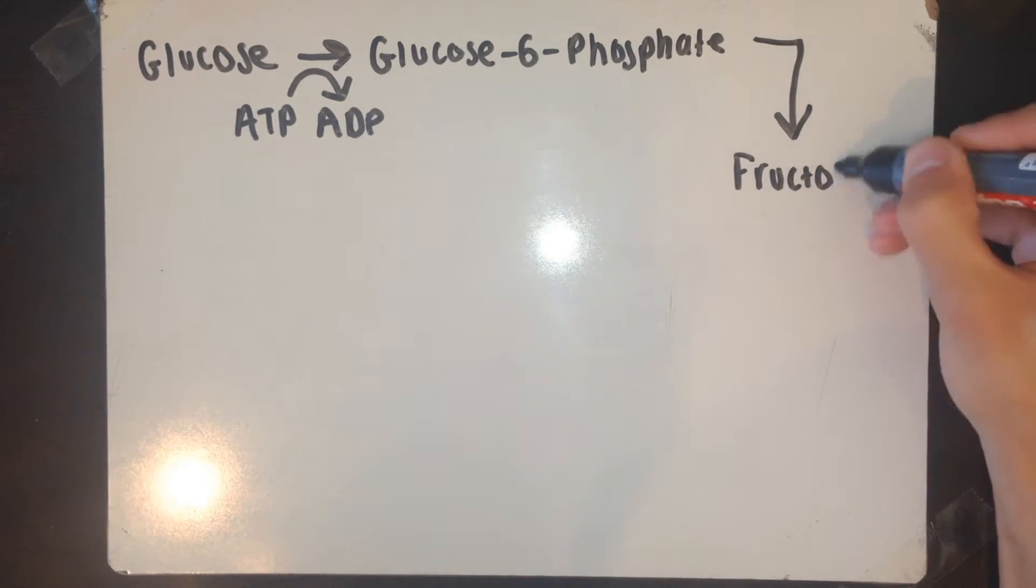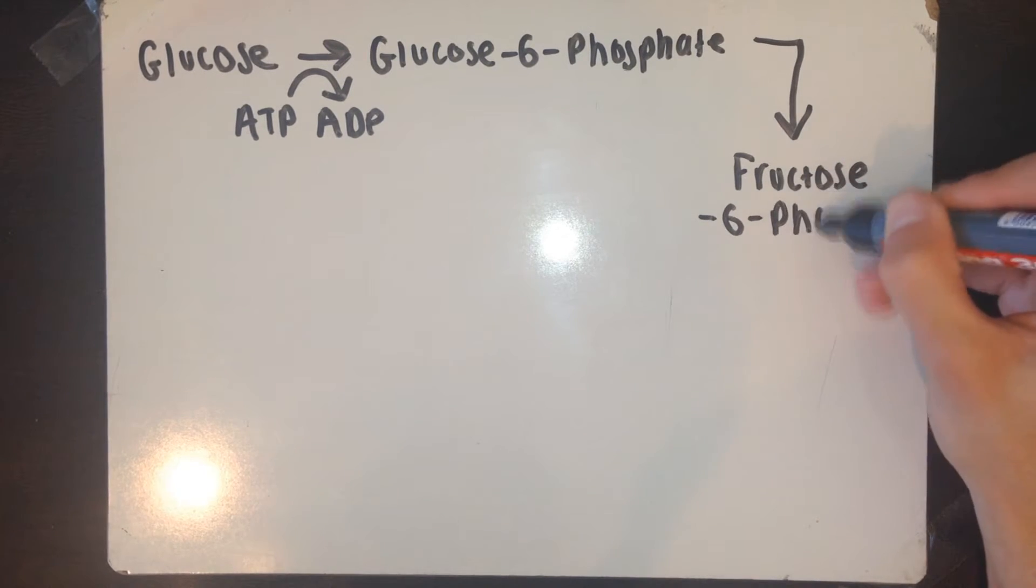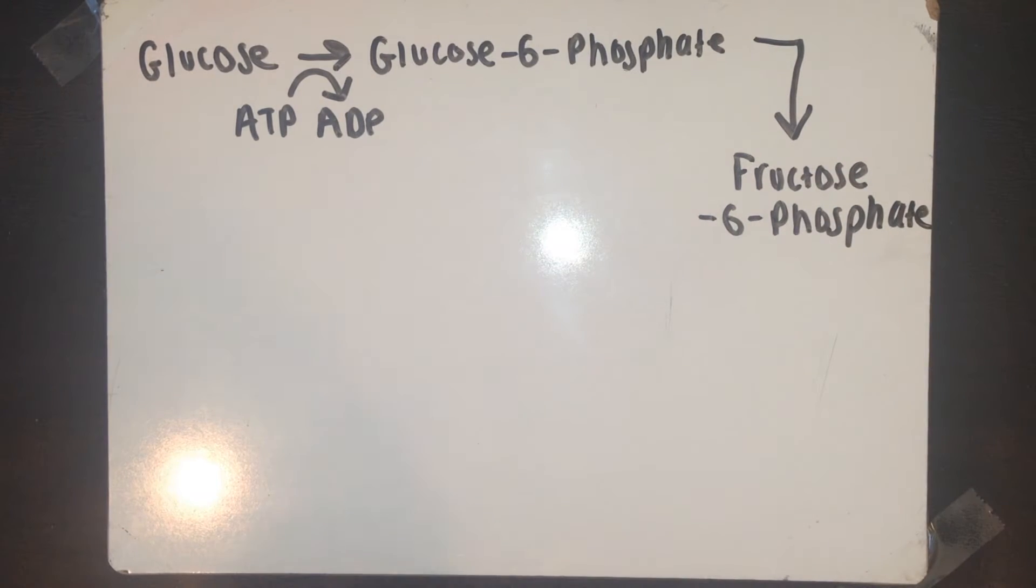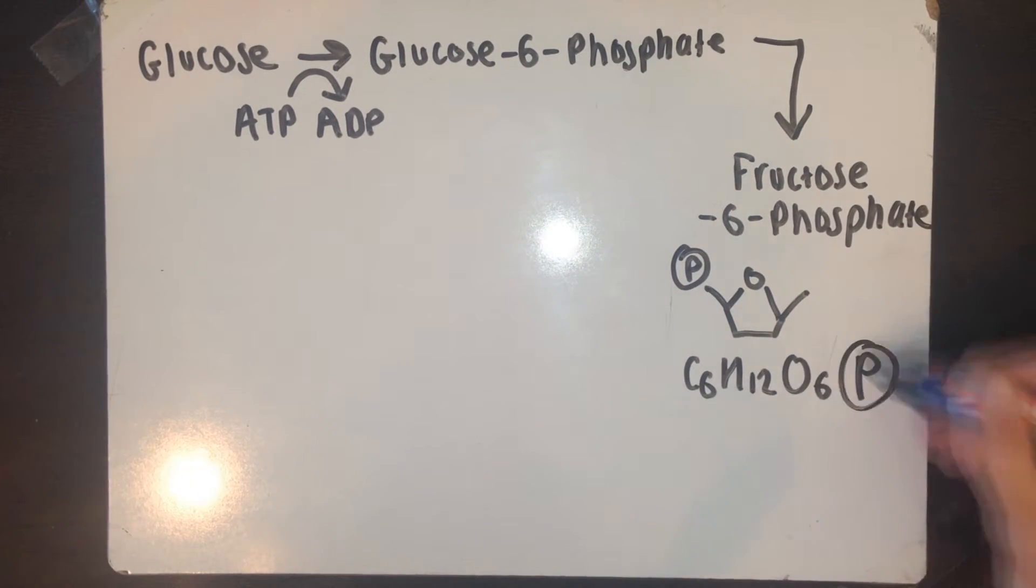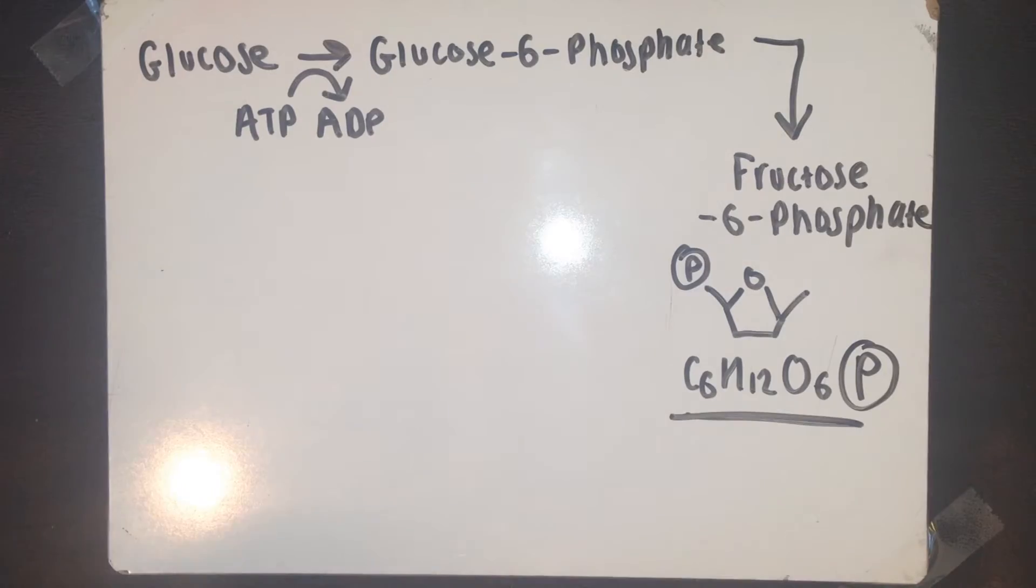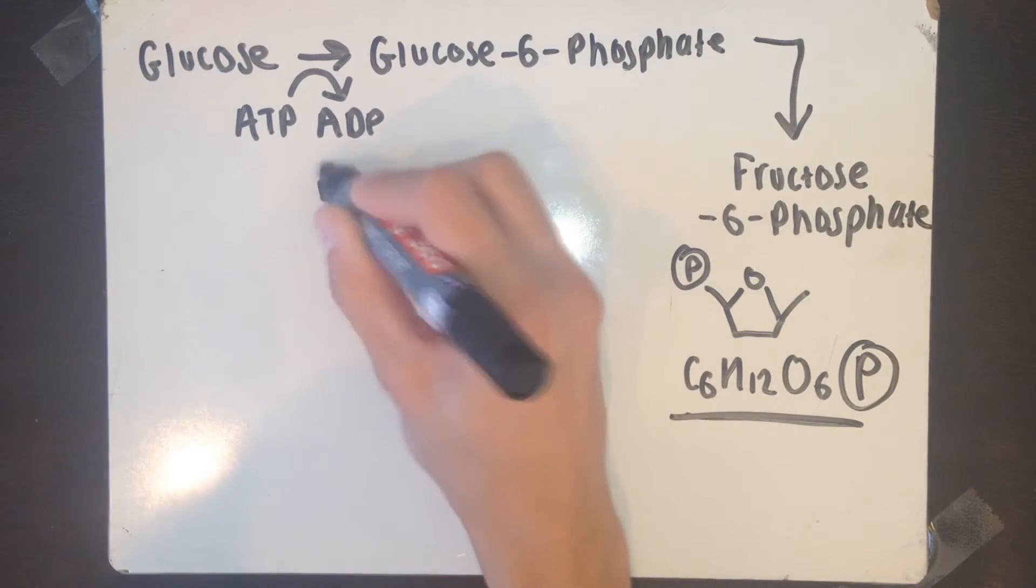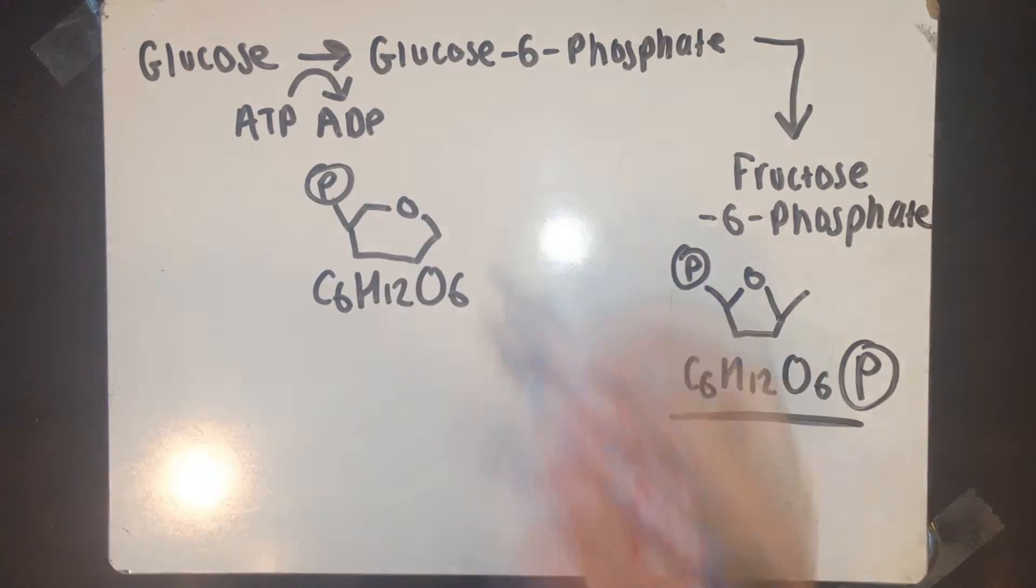Now glucose 6-phosphate is changed to fructose 6-phosphate. As you can see from the diagram here, the only real thing that has changed is the structure. The formula is still the same: C6H12O6 and the phosphate group.